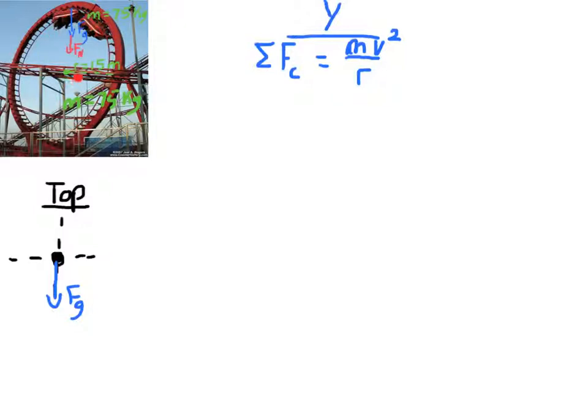We're going to give ourselves a radius of 15 meters. We'll start out working all this in letters and plug in numbers at the very end. Now if you think about this, the spot where you really have to worry about whether you're going to make it through the loop is the very top of the loop — that's the part where you're actually concerned you might fall off.